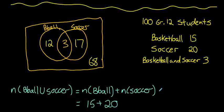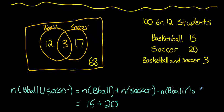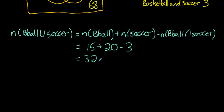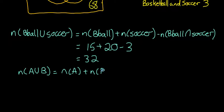So in our formula for the union of two sets, we have to subtract the intersection — those 3 people who were double counted. The general formula is: the number of elements in A or B equals the number in A, plus the number in B, minus the number in the intersection of A and B. This gives us 32.